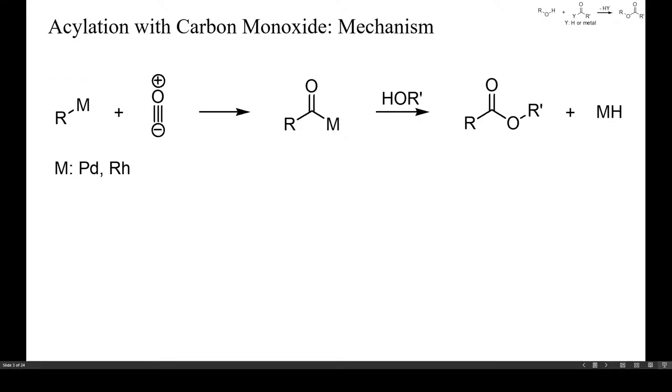One way to use carbon monoxide for the preparation of esters is the reaction of certain transition metal acyl complexes with alcohols, as sketched here. These reactions can succeed with only catalytic amounts of transition metal catalyst.